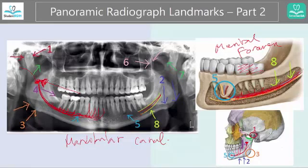I hope we learned a lot about the panoramic radiograph landmarks, especially of the mandible. You have part one, which covered the sinuses and some other structures, and let's jump now to part three, which is going to cover even more structures.